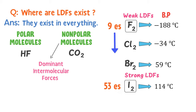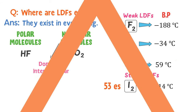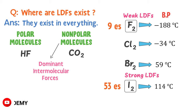In Group 7, if you move down the group, the number of electrons increases successively. As a result, London dispersion forces also increase down the group. That is why the boiling point also increases down the group. Therefore, we say that the boiling point of iodine is greater than that of fluorine gas. This was all about London dispersion forces and van der Waals forces.